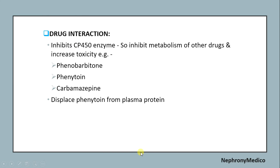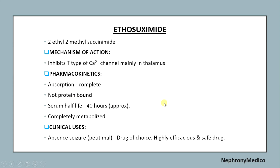Drug interactions of valproic acid: it inhibits CYP450 enzyme, so it inhibits metabolism of other drugs and increases toxicity of phenobarbitone, phenytoin, and carbamazepine. It also displaces phenytoin from plasma protein. Ethosuximide is 2-ethyl-2-methylsuccinimide. Its mechanism of action is inhibition of T-type calcium channels, mainly in the thalamus.